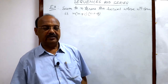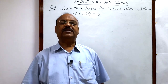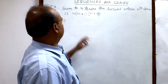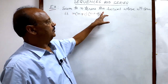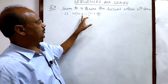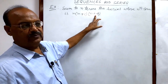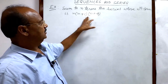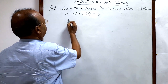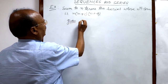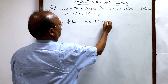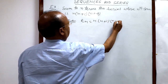Let us discuss a very important and interesting question from the chapter Sequence and Series. The question is: sum to n terms the series whose nth term is n(n+1)(n+4). So, the given nth term tn is equal to n into n plus 1 into n plus 4.